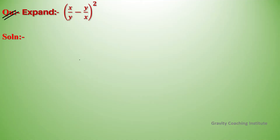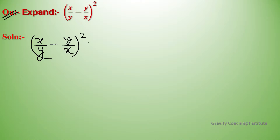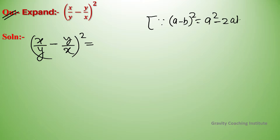Expand x by y minus y by x whole square. We use the identity a minus b whole square equal to a square minus 2ab plus b square.